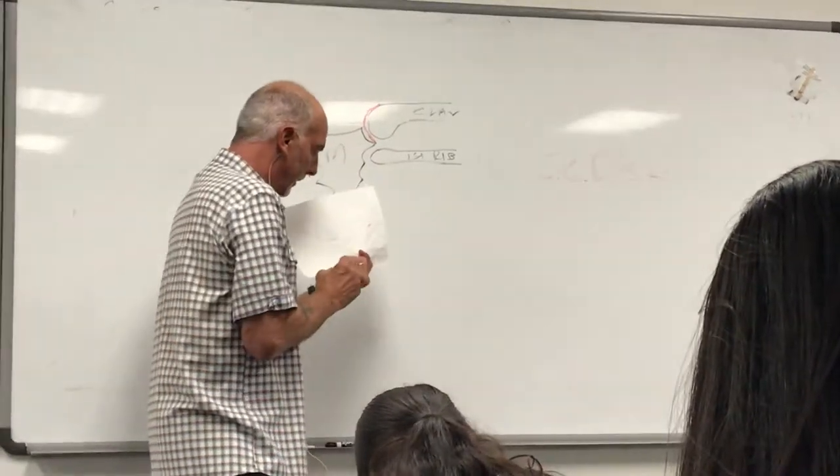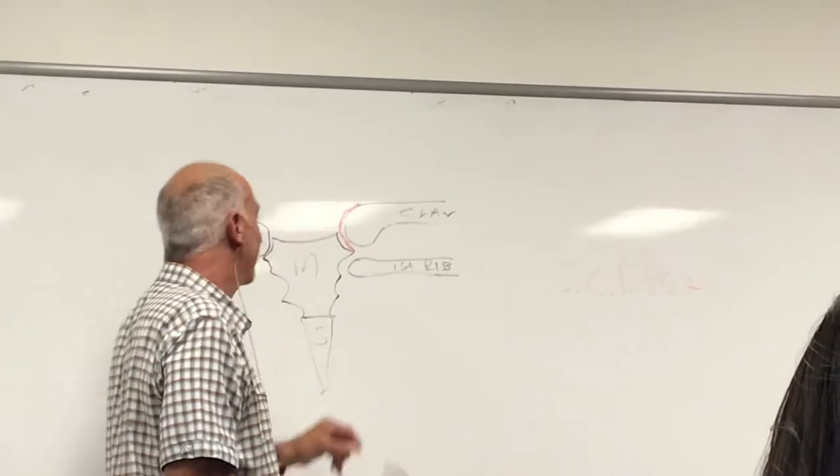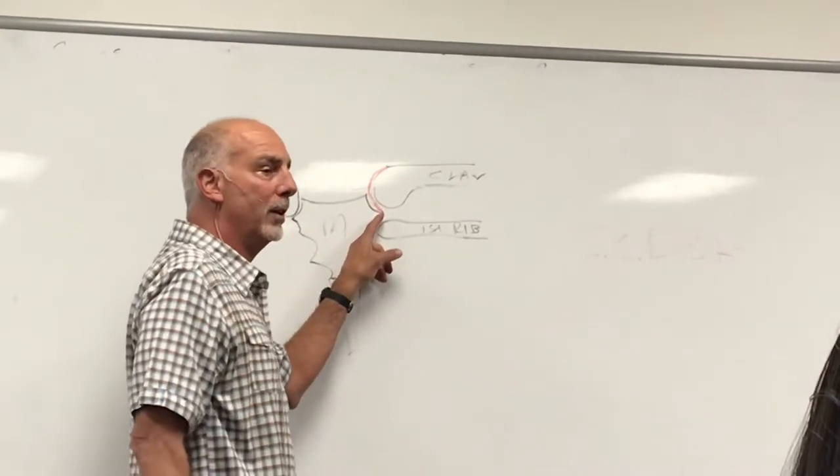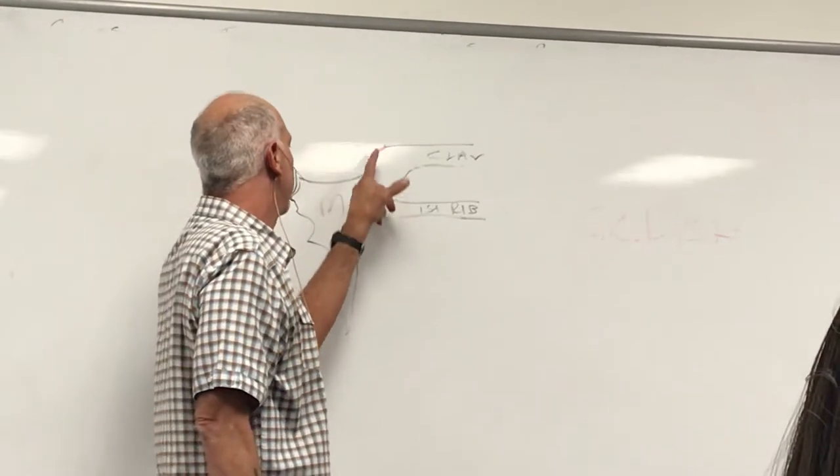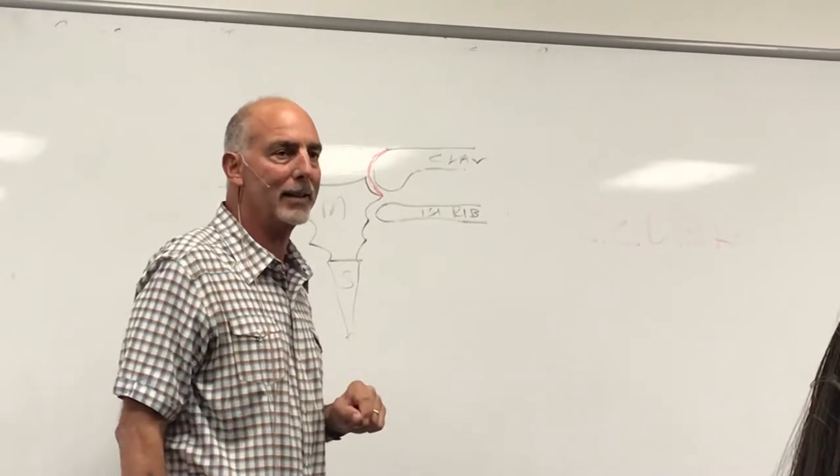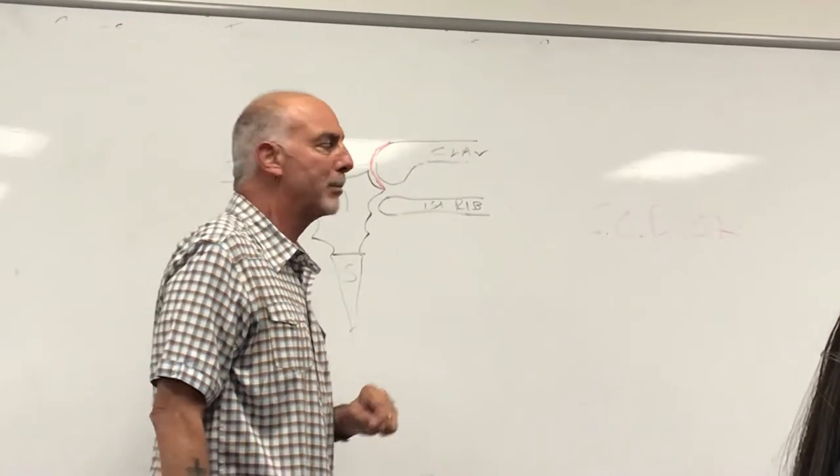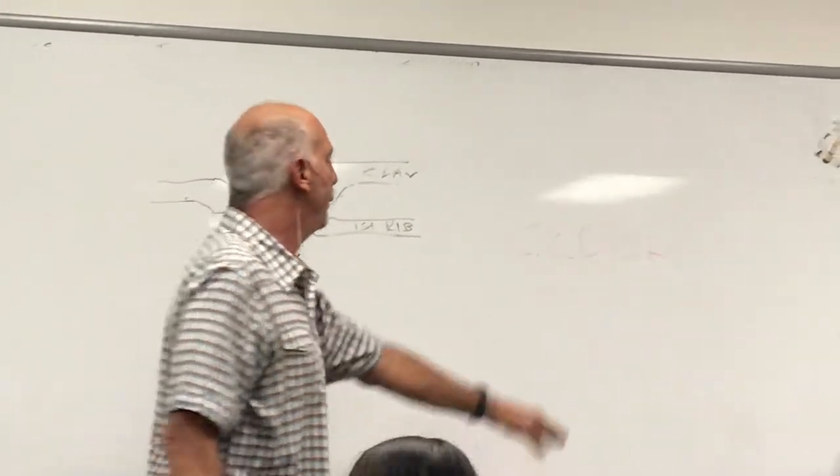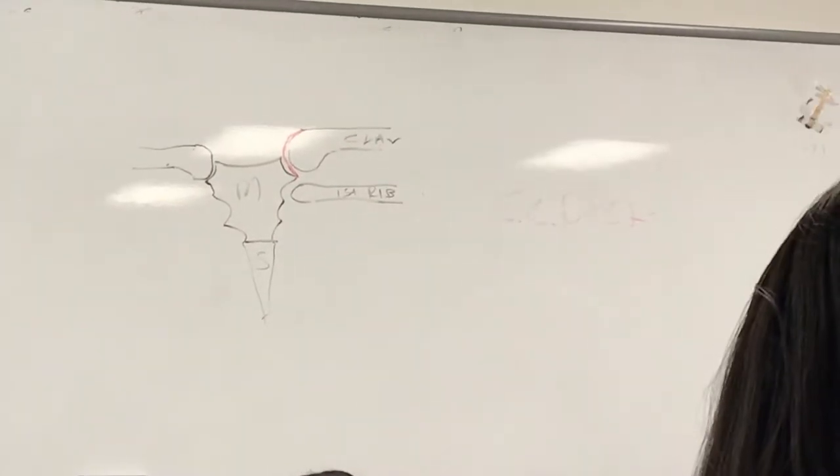In red, the sternoclavicular disc attaching from the inferior surface of the clavicular notch to the superior surface of the head of the clavicle. Remember, this is a fibrocartilage. Maybe you should put in parentheses here: fibrocartilage disc.